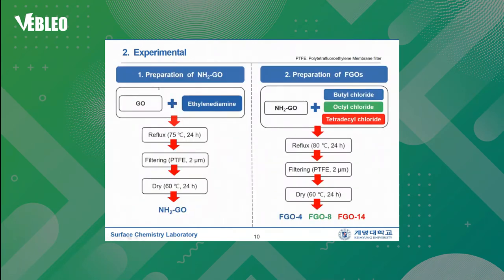The first step of functionalization of graphene oxide is the preparation of aminized graphene oxide. GO and ethylene diamine are mixed together and refluxed at 75 degrees for 24 hours. Then the product was filtered by a PTFE filter with 2 micron pore size. These products were dried at 60 degrees for 24 hours to obtain aminized graphene oxide.